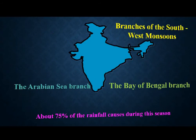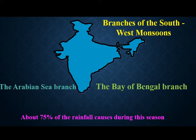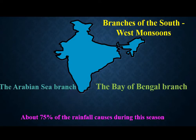About 75% of the rainfall in India happens during this season. We know that hardly 2% of rain happens in the winter season, and some part of rain also occurs in the summer season. But in India, 75% of the rainfall happens during the rainy season, because the wind blows from the Indian Ocean to India.